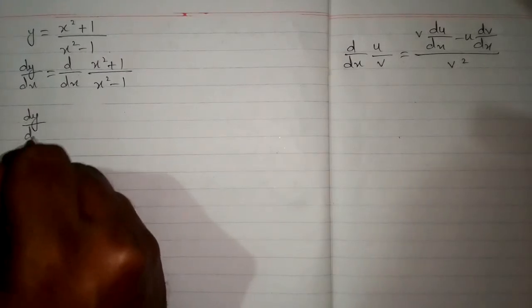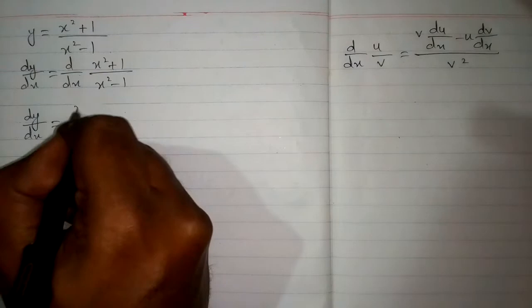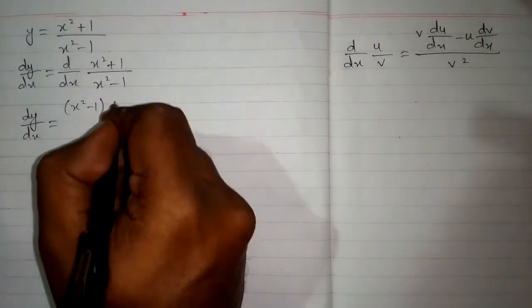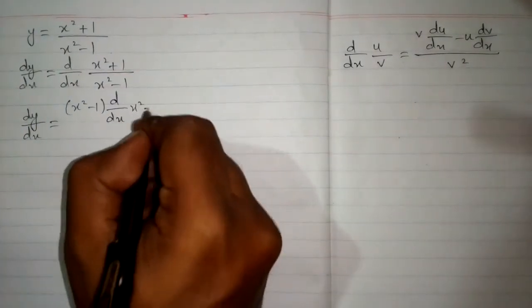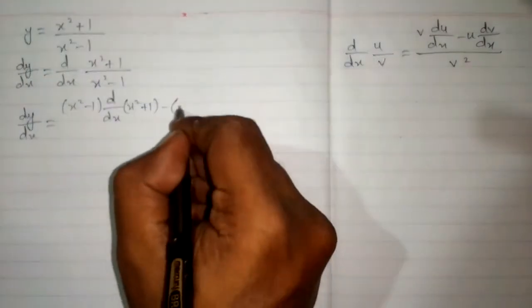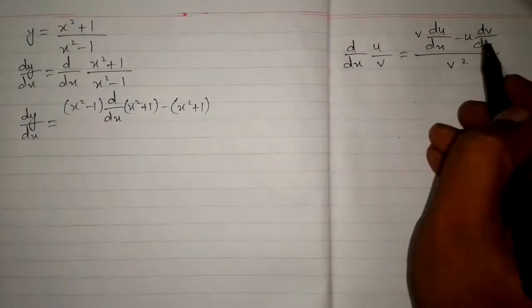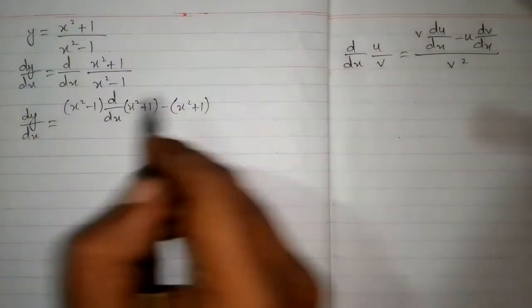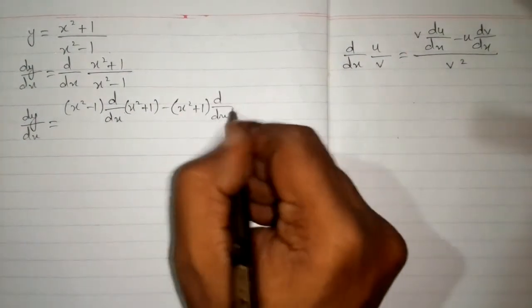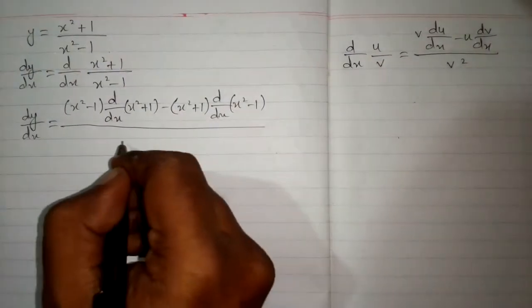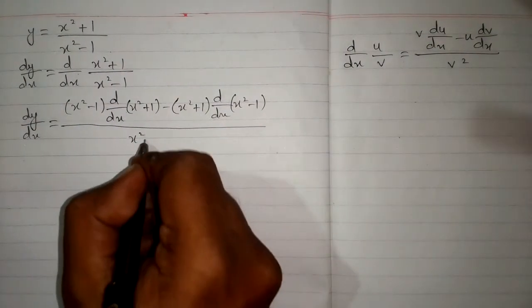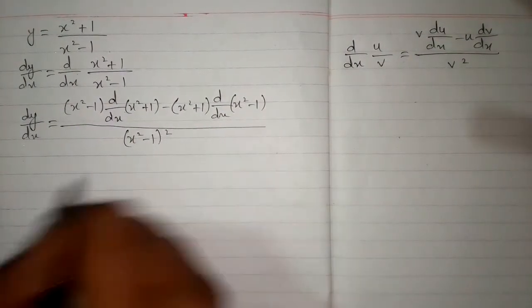So when we apply the formula, first we will write v which is x square minus 1, and then the derivative of u which is x square plus 1. Then the minus sign and then u, which is x square plus 1, multiplied by the derivative of v, which is x square minus 1. Upon v square, and v square is x square minus 1 whole square.